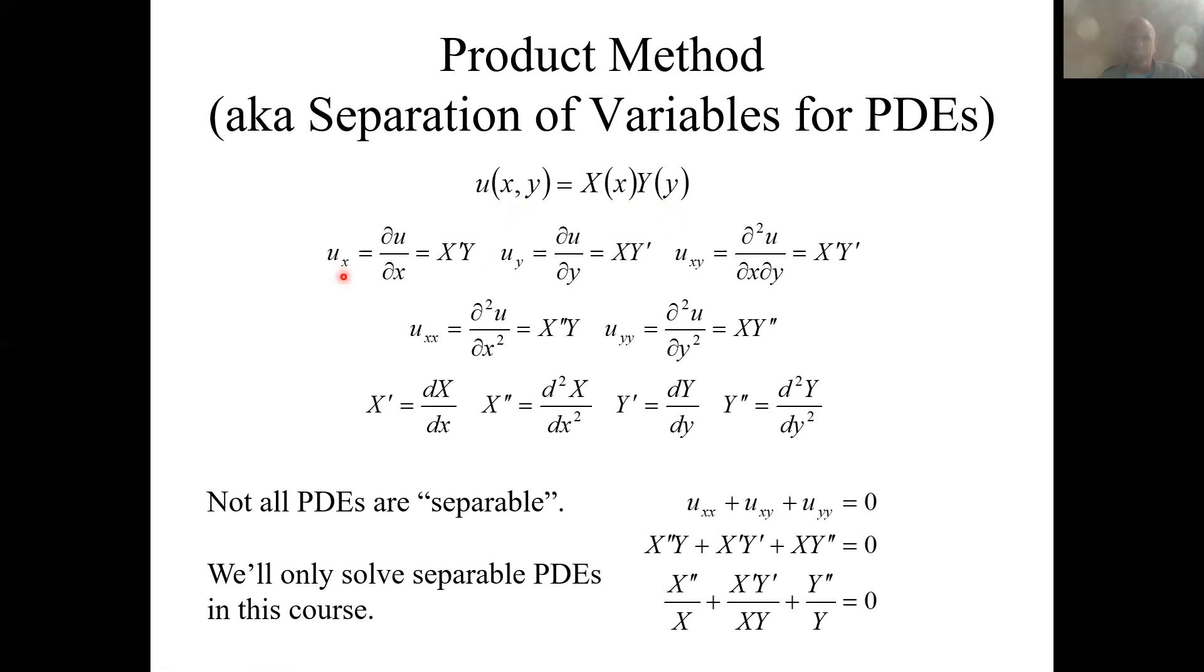More notation is the subscript. U sub x means the partial of the function u with respect to x. And when you have it as a product like this, that would be x prime, which means total derivative of big function x, or the function big x, with respect to the variable little x. If you look at all of these, if I have two subscripts, it means that double partial, like I can have sub x, y, that means the second partial, like to each of the variables. And that would be x prime, y prime, where y prime means the derivative of big y with respect to little y.